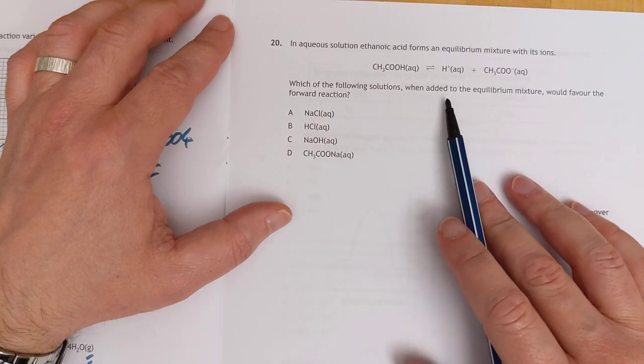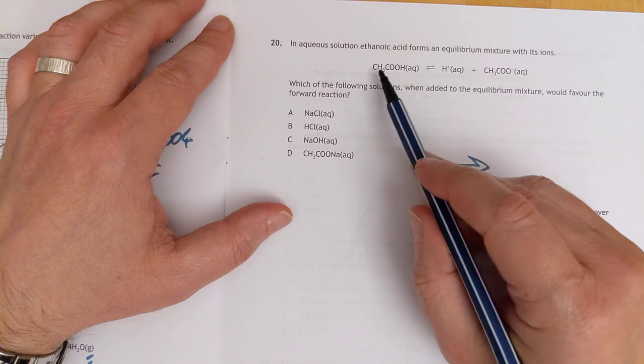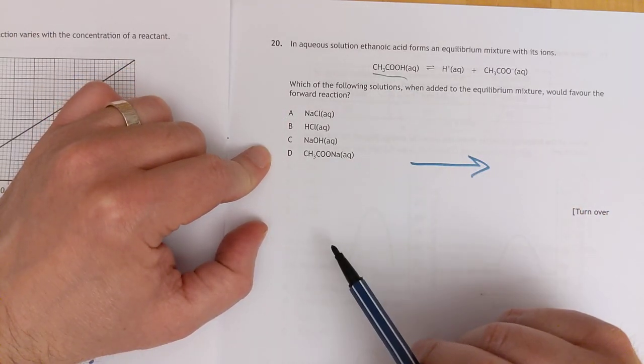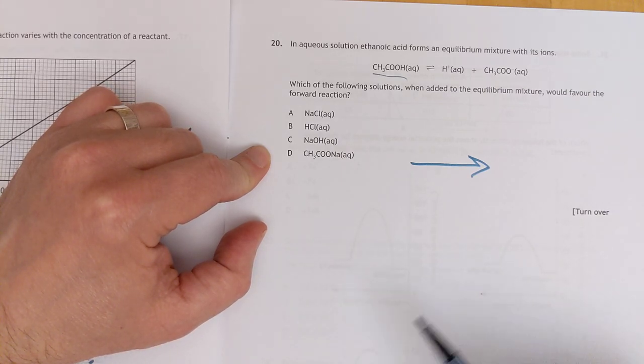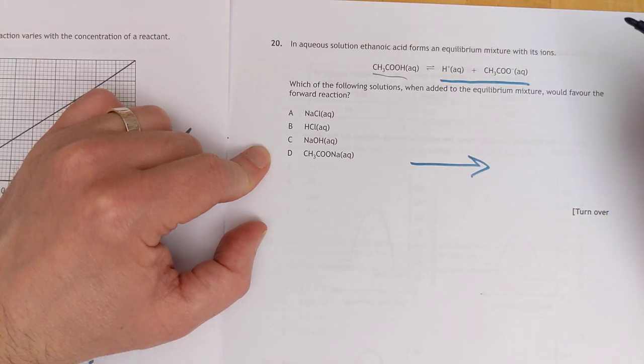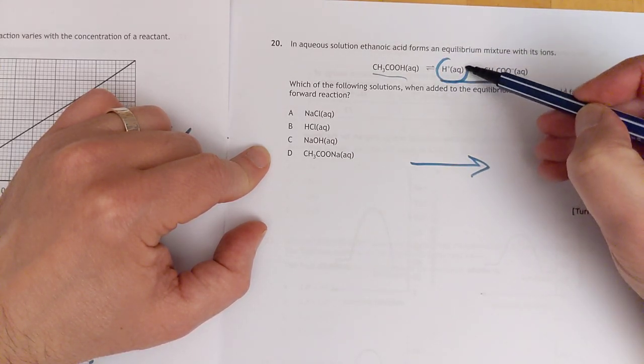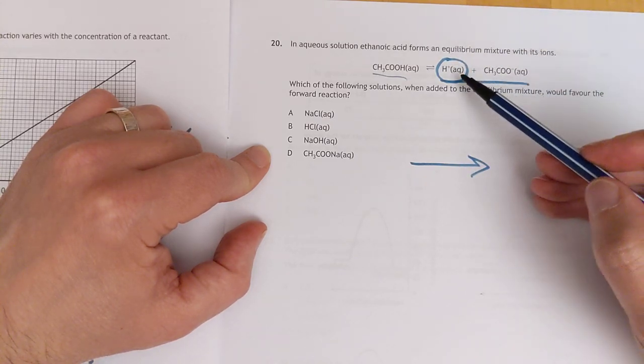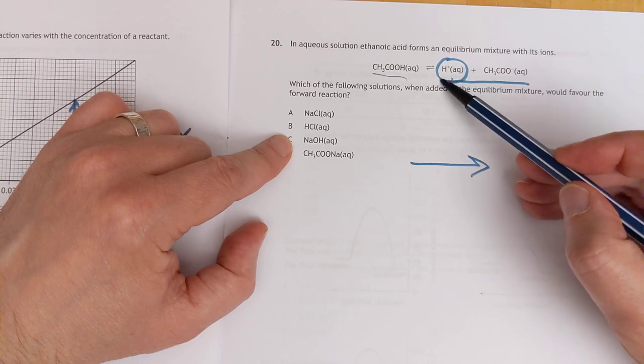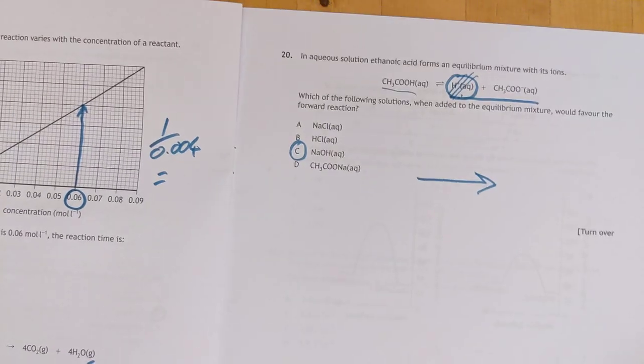Number twenty. Equilibrium following solutions would favor the forward reaction. We want to drive this reaction this way, which means we need to add some of this, but of course none of these are this. If we can't add to this side, we will remove from this side. There's two ways of doing this. I see hydrogen ions there. That looks like a culprit, because if you add a hydroxide ion, then these will get snatched out of the equilibrium, and you'll drive the reaction to the right, so the answer is sodium hydroxide.